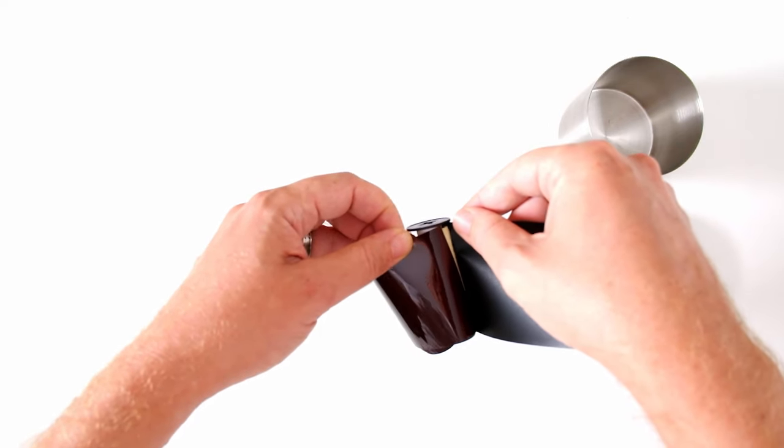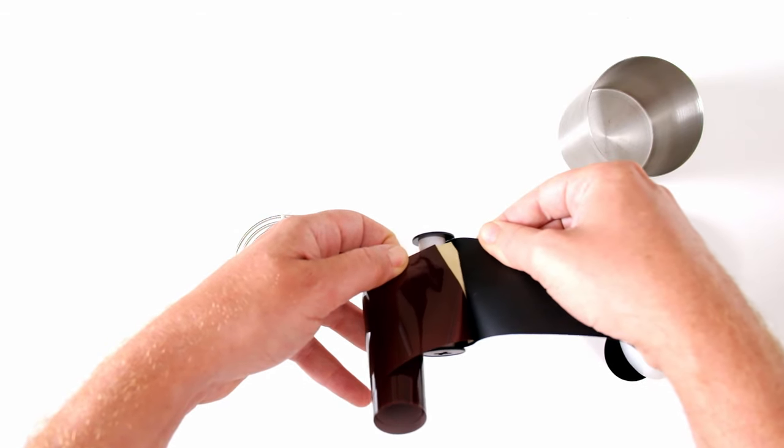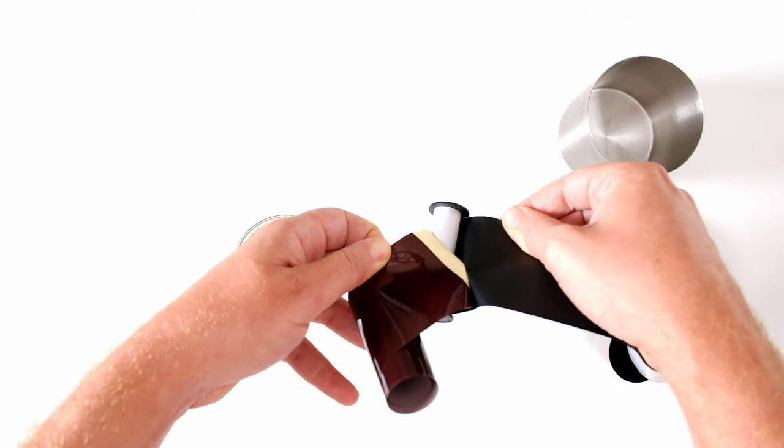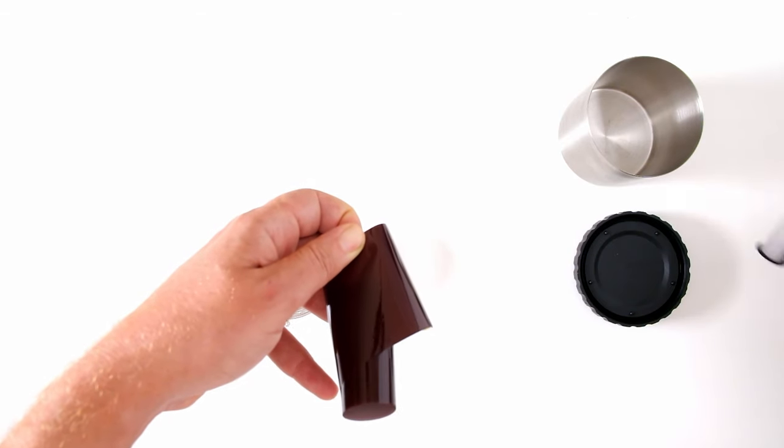And you can even see a little bit of tape peeking out there. So now just peel the backing paper away from the tape. And you can discard that along with the spool.